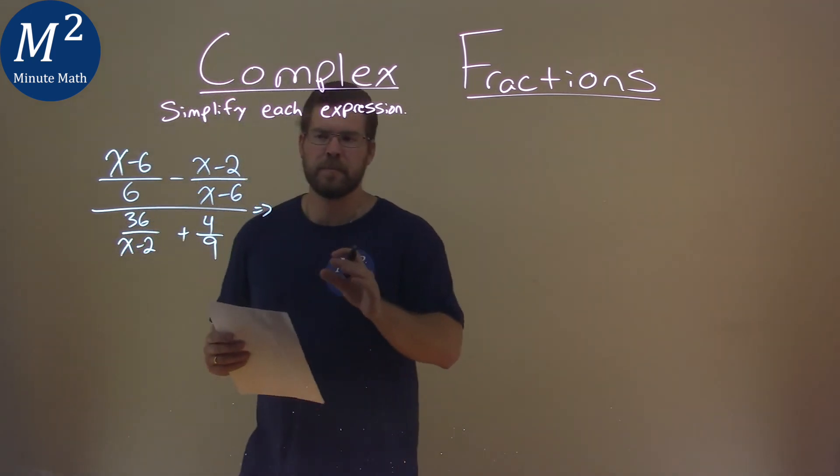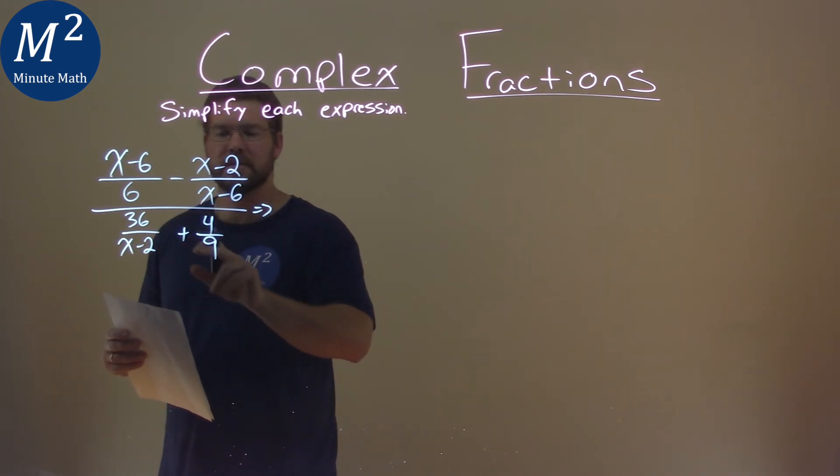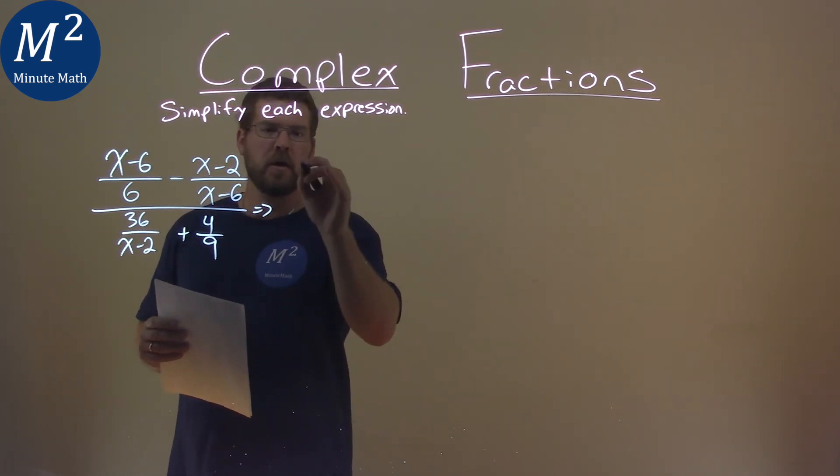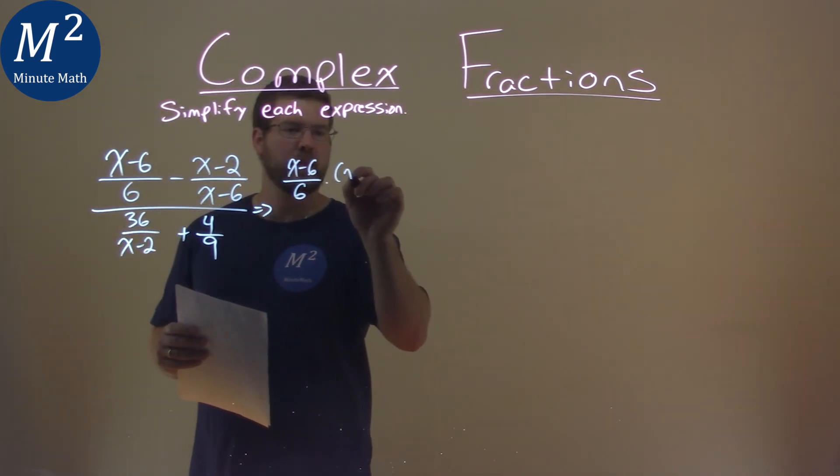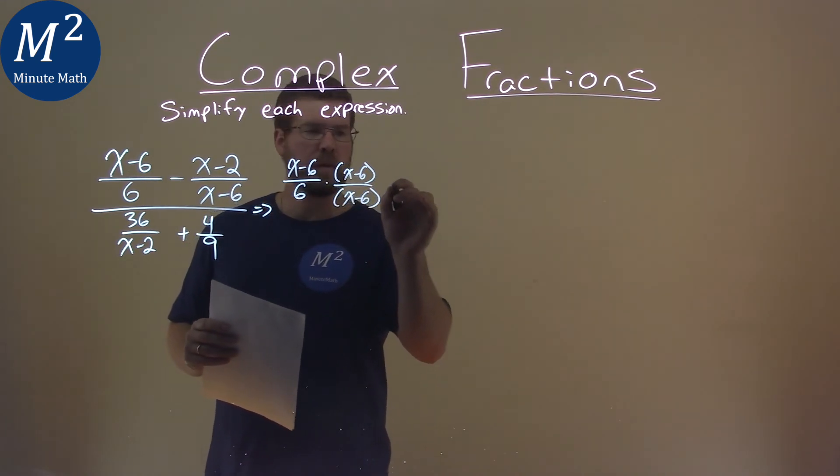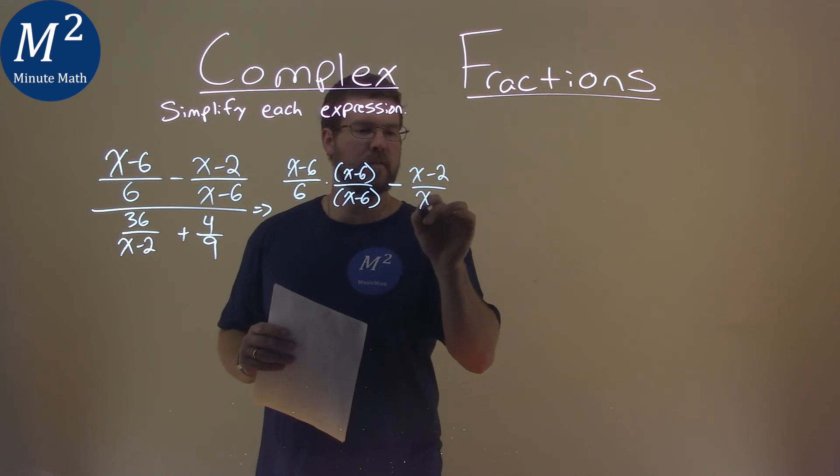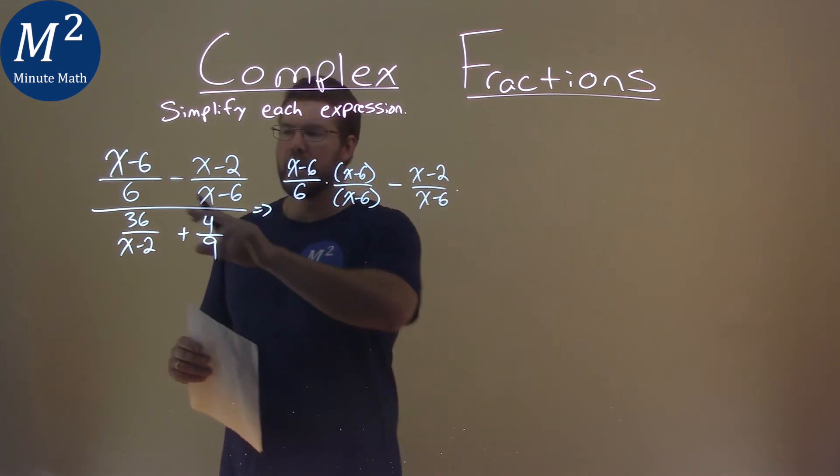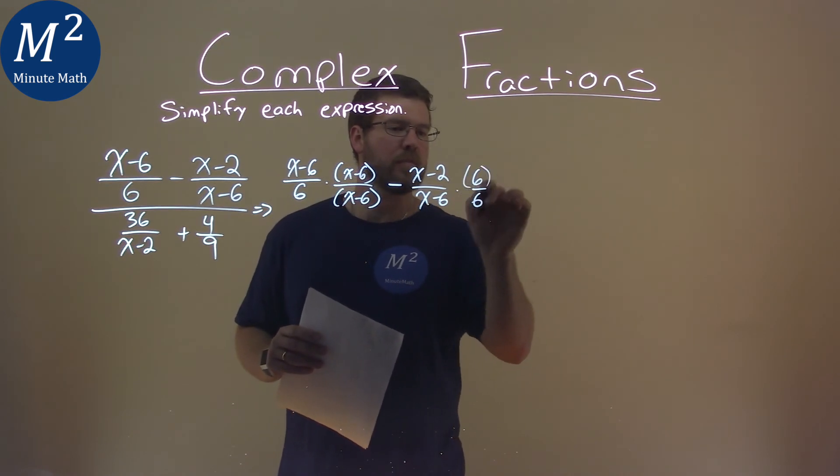Well, what I'm going to do is, in my big numerator and big denominator, find common denominators for each set of these fractions. So, my x minus 6 over 6, I'm going to multiply that by this denominator, x minus 6 over itself. Then, we're going to do the same thing. x minus 2 here over x minus 6. We're going to multiply that by this denominator, 6 over 6.